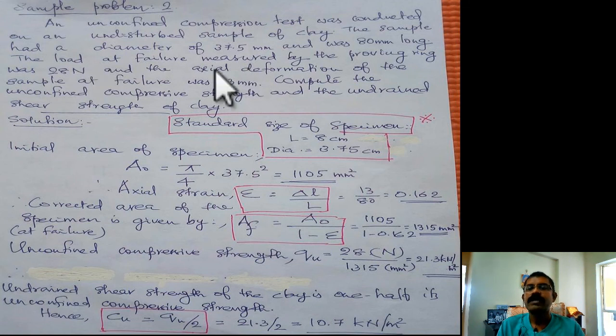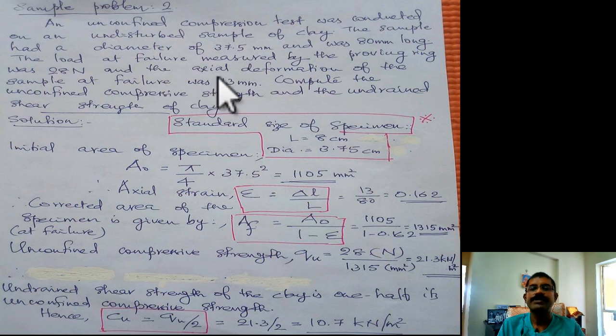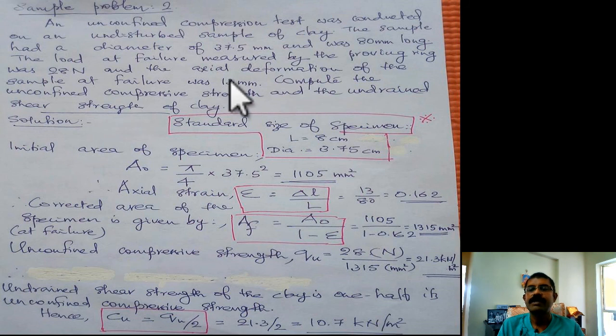The load at failure measured by the proving ring was 28 kilo Newton and axial deformation of the sample at failure was 13 mm. Compute the unconfined compressive strength and the undrained shear strength of clay.